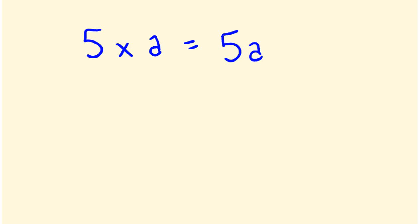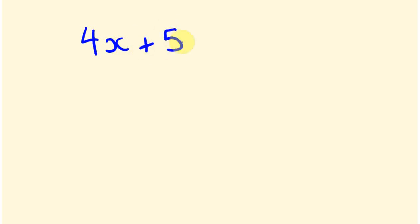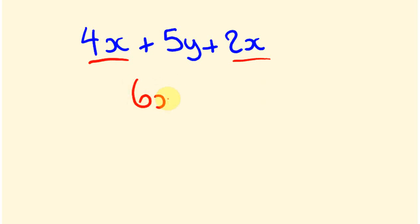When doing algebra, we can also add certain algebraic expressions together — ones with like terms, which are ones that contain exactly the same pronumerals. For example, 4x plus 5y plus 2x: we can see that 4x and 2x have the same pronumeral, so we group them together. 4x plus 2x is 6x. The 5y is a different pronumeral, so we can't group it in — it stays as plus 5y, giving us 6x plus 5y.